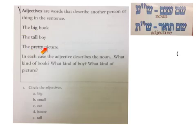Now, how does this work in Hebrew? How is a Sheyem To'ar in Hebrew different than the adjective in English?